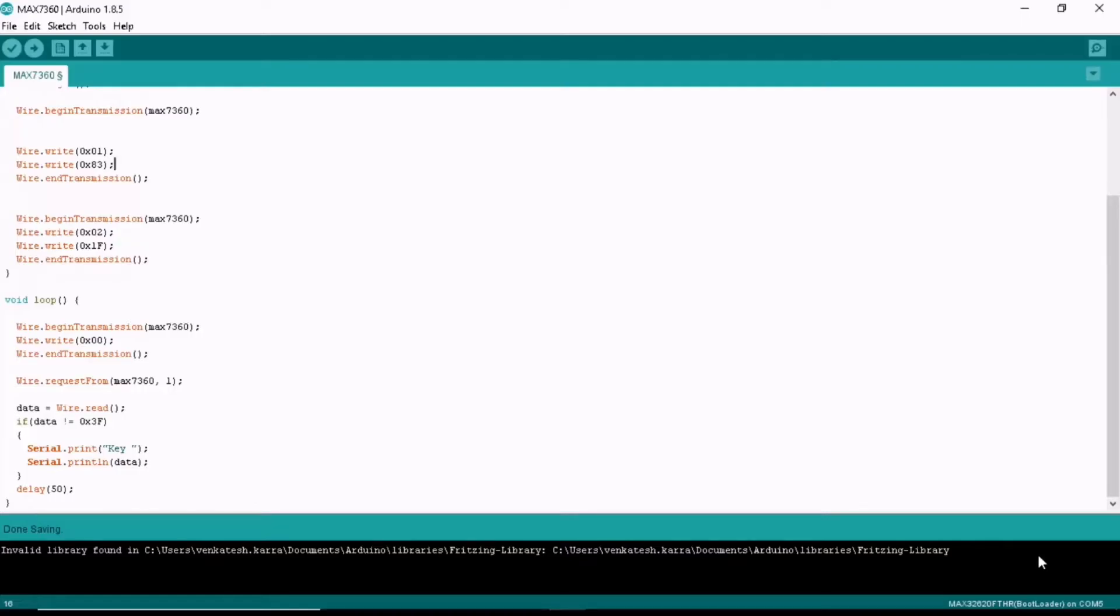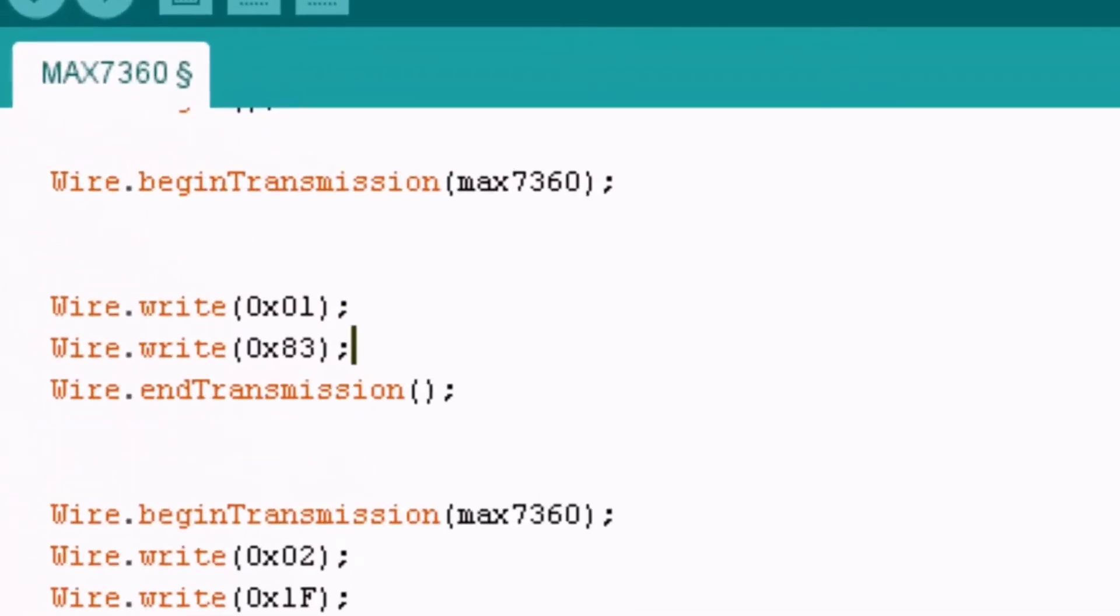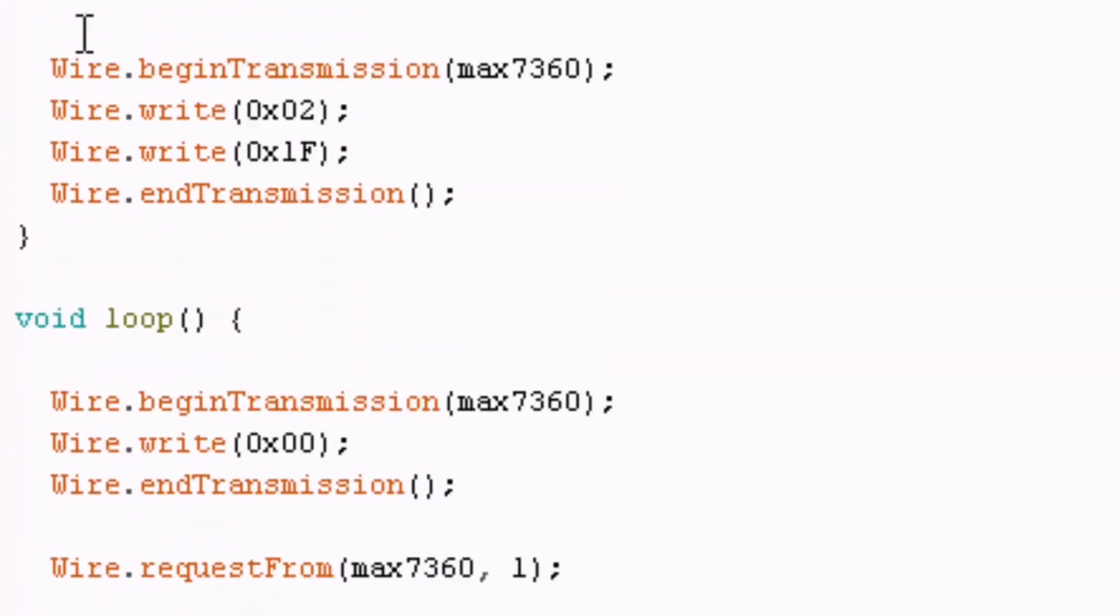Let us have a look at the Arduino code. This is pretty simple and straightforward. Initially we have configured the registers to monitor key switches. Once that is done, we are continuously reading the FIFO for the status of the key switches.